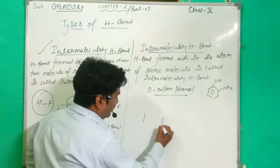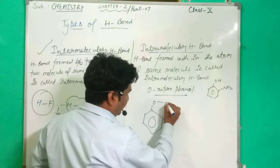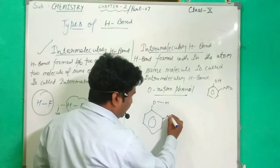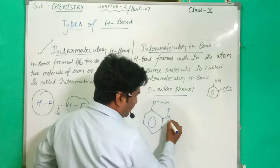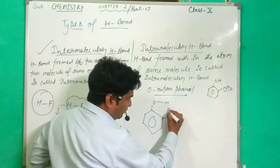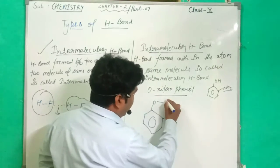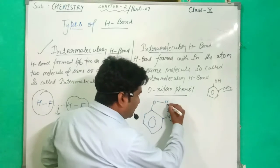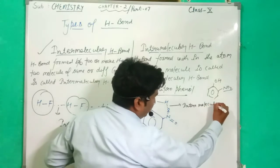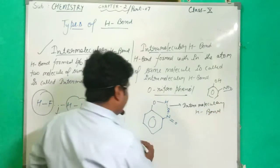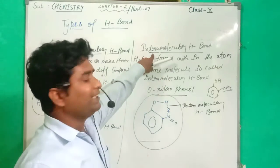Let's see how we can justify this. In the structure, this is the benzene ring, one oxygen and one hydrogen are present, and in the ortho-position, nitrogen is present with a nitro group and one oxygen atom. A coordinate bond is formed between the oxygen and nitrogen — as we discussed in a previous video. The Hydrogen and this Oxygen attract each other, and this attraction force is the Intramolecular Hydrogen Bond, formed within one single molecule.